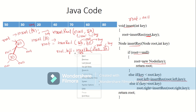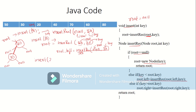You have to remember to return back to the position where you called from, because you have a return statement at each step. From wherever you called, at last you will be returning back to the original place, where the root equals 50.